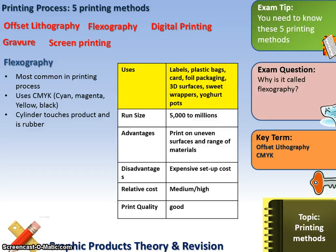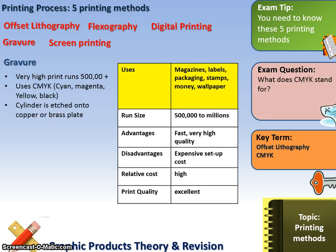Flexography is also very common, using the full-colour CMYK process. It tends to be used for printing on 3D surfaces such as yogurt pots or the side of a flask. It is high volume, expensive to set up, and produces very good print quality.